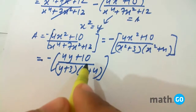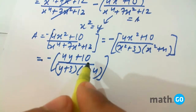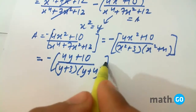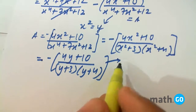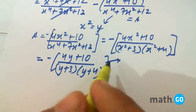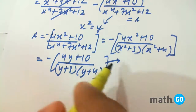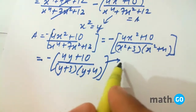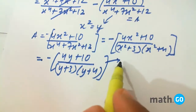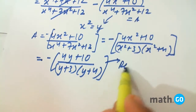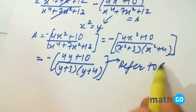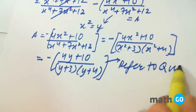Now, it is easily converted to partial fractions, just as we have done in the other questions. So it can be easily solved. For more help, refer to question number 3 of this exercise.